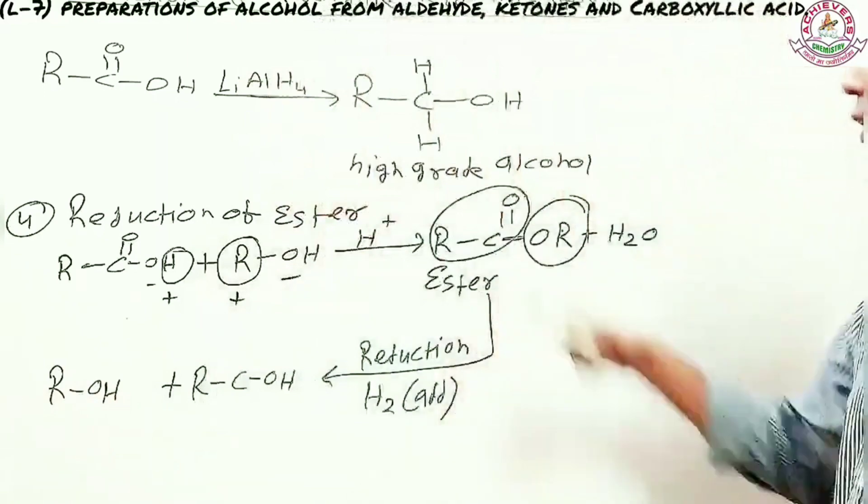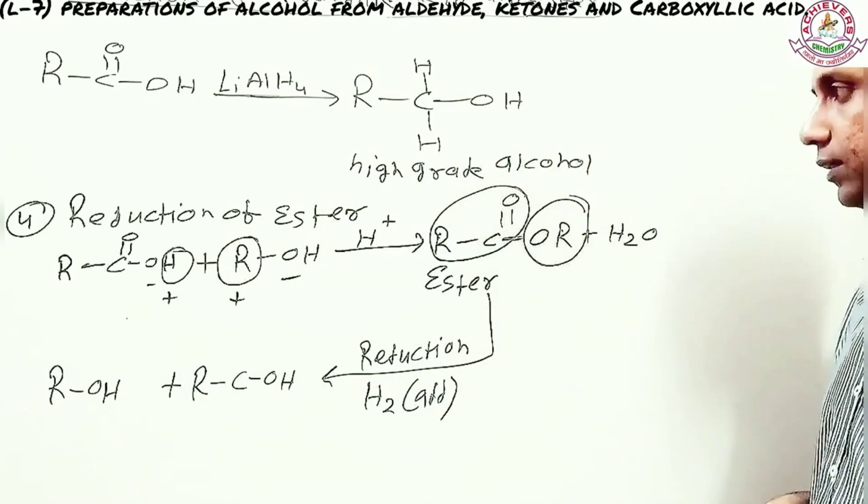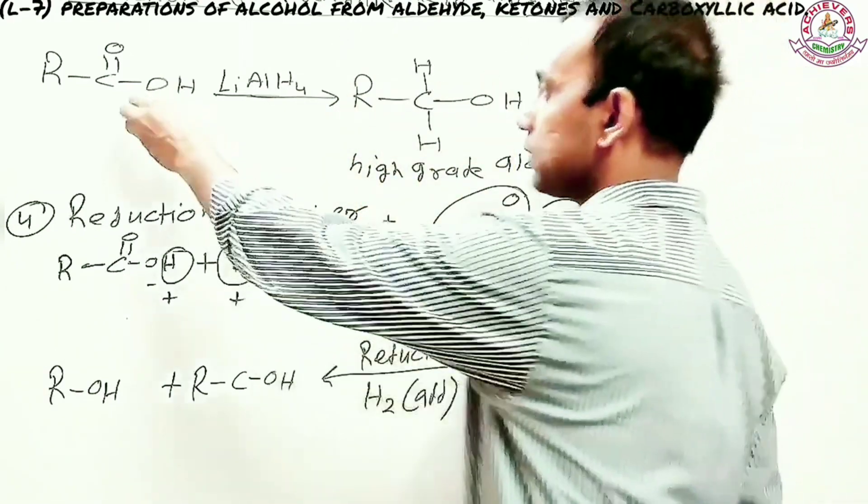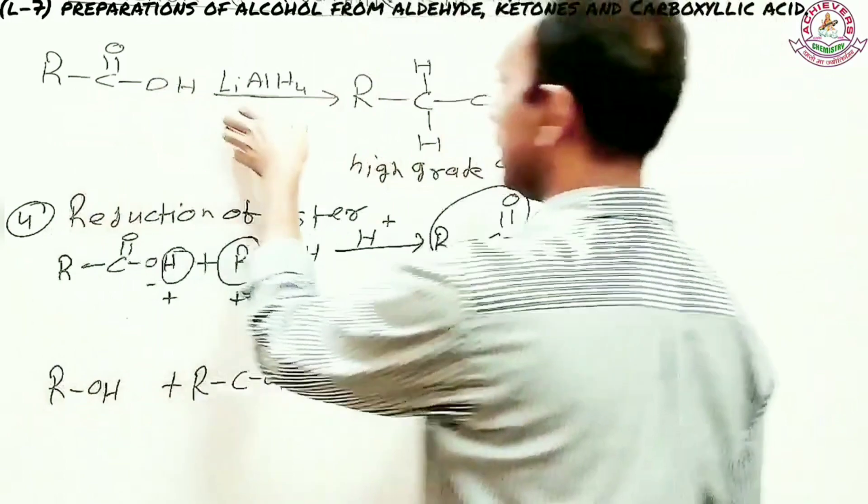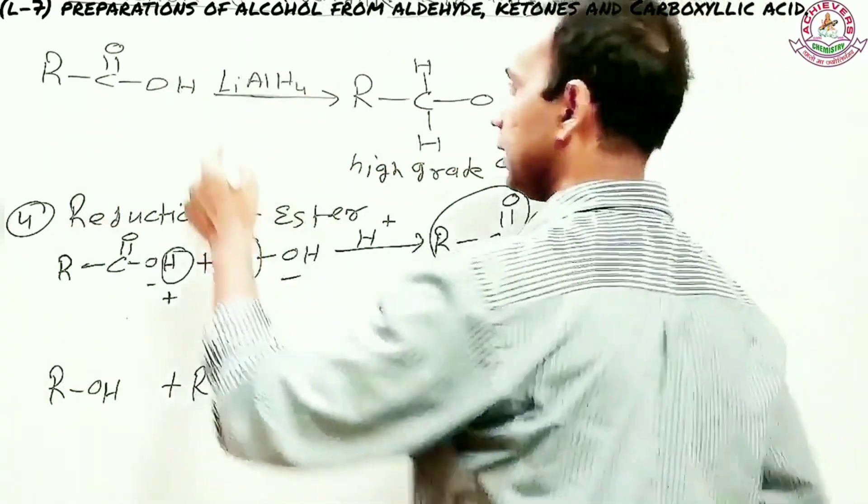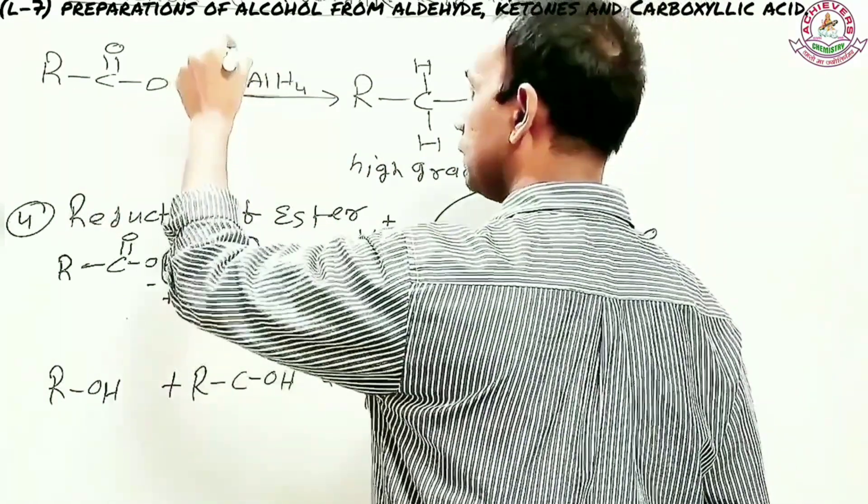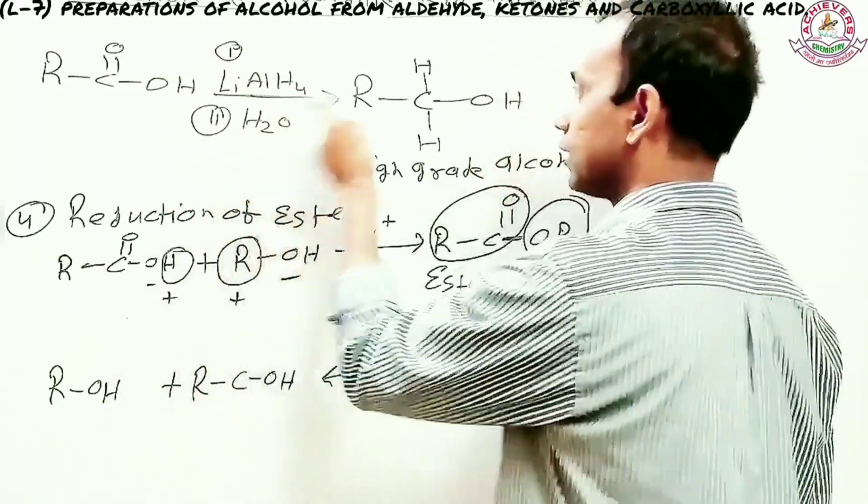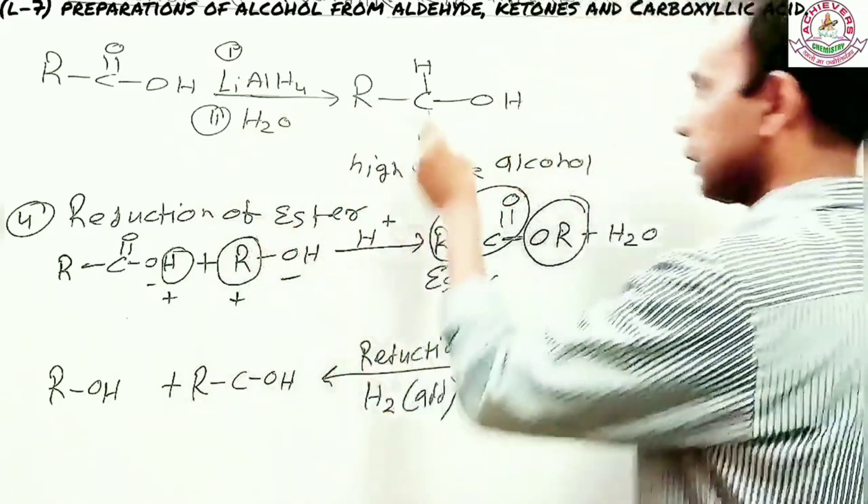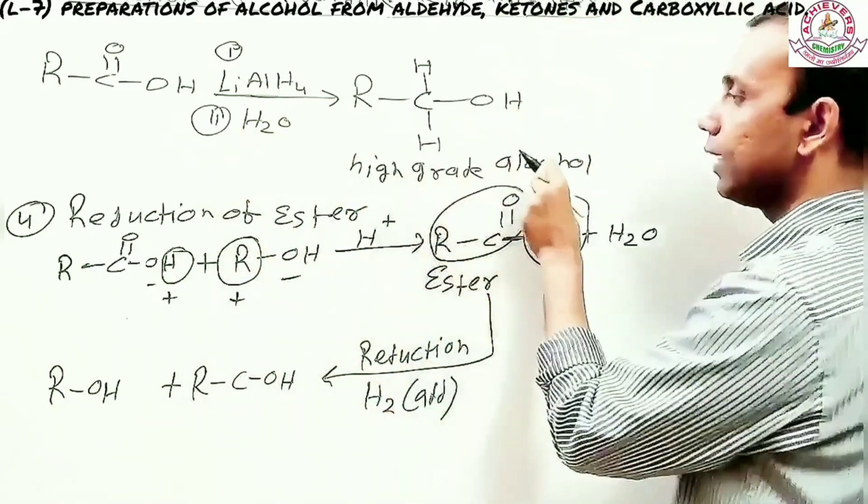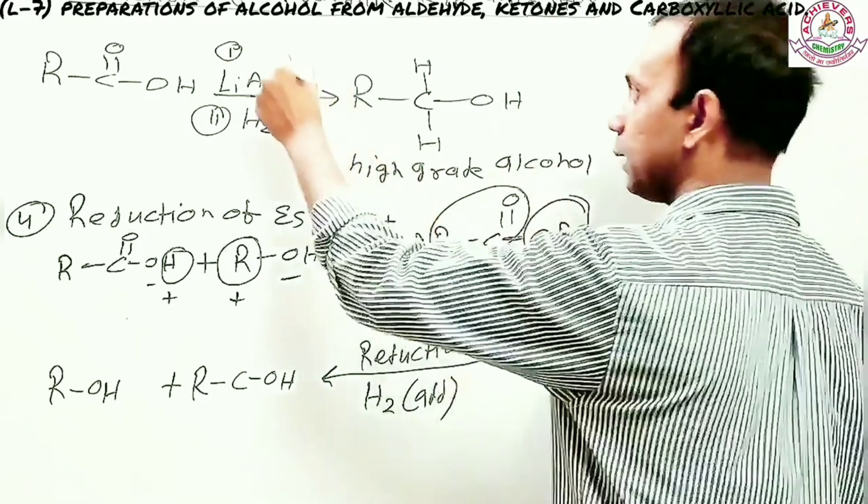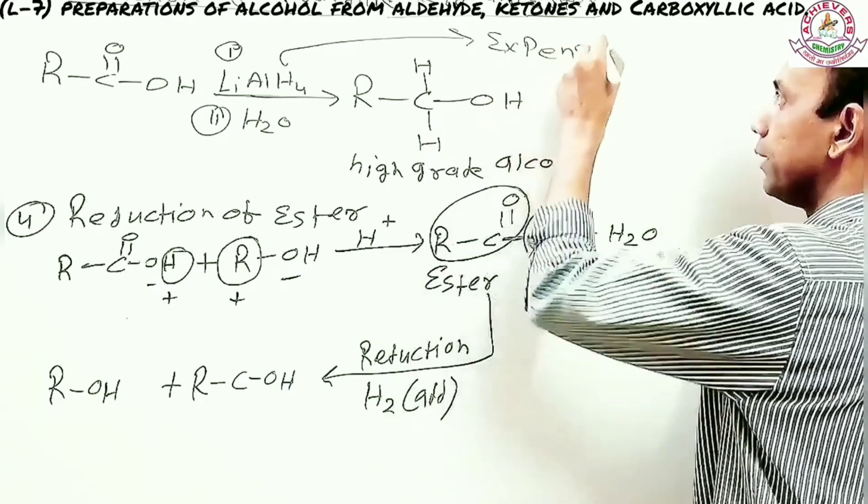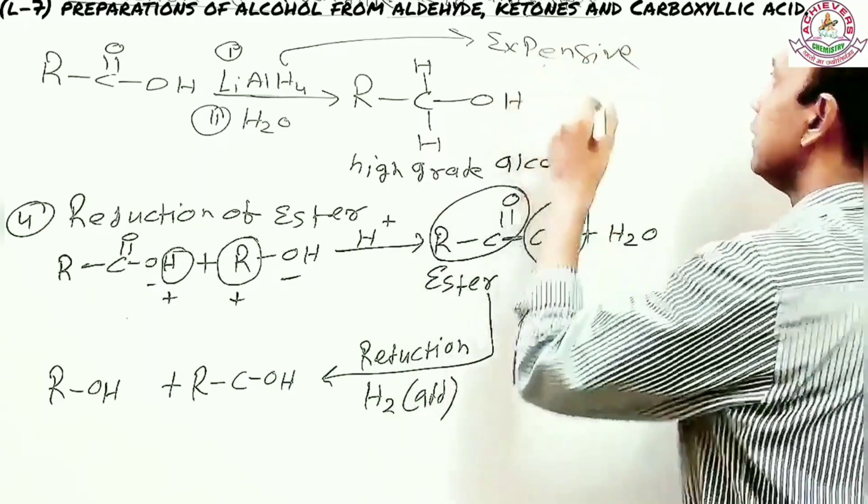So this is low and the other one is very low. Carboxylic acid reduction to reduce the ester. In this reaction, you have to reduce the ester. And the other one, you have to use water. So this reaction is 2 steps. After that, you get alcohol. But it is high grade alcohol and it is expensive. So this reaction is expensive. It is expensive reagent. It is very expensive.